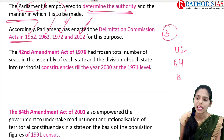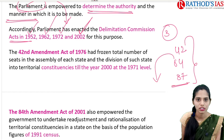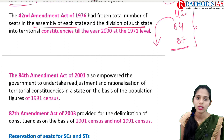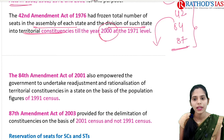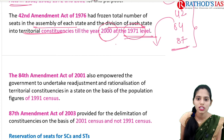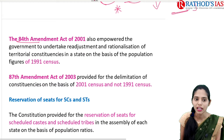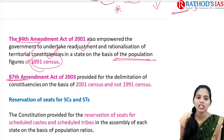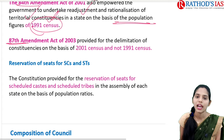These constitutional amendment acts mainly concern delimitation. The 42nd Constitutional Amendment Act says the assembly seats of each state and the division into territorial constituencies should be frozen until 2000, based on the 1971 census. The 84th Constitutional Amendment Act says there is a need for readjustment and rationalization of territorial constituencies based on population figures of the 1991 census. The 87th Amendment Act says readjustment should be based on the 2001 census, not the 1991 census. These are very important for prelims.